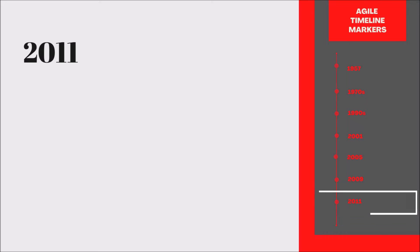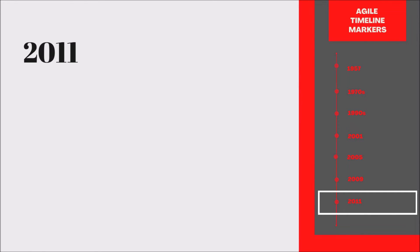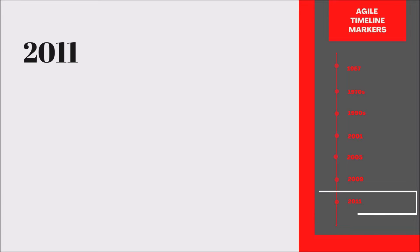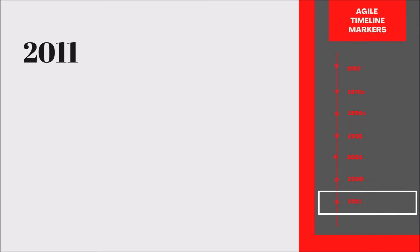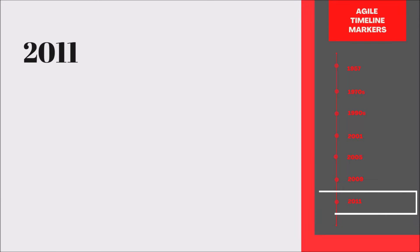In 2011, the Agile Alliance created the Guide to Agile Practices. It was renamed the Agile Glossary and contained working definitions of Agile practices, terms, elements, and commentaries.